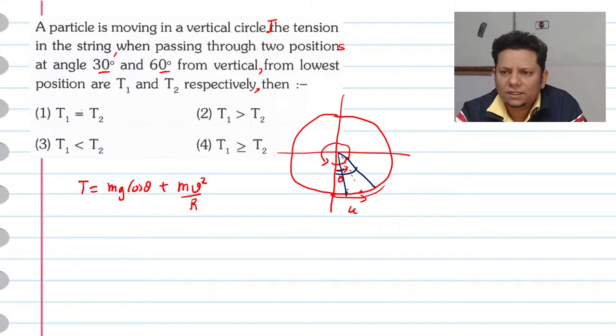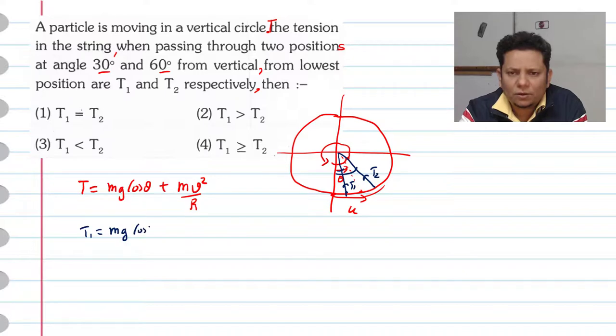30° and 60°. Here the tension is T₁, and here the tension is T₂. Now in this case, if we write the value: T₁ will be equal to mg cos 30° plus mu₁²/r.